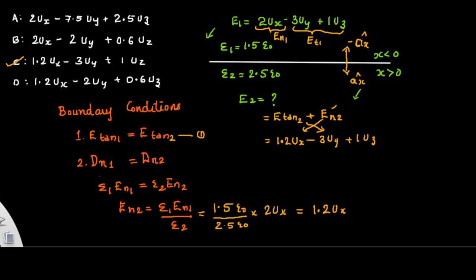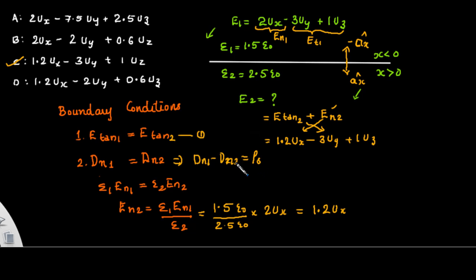One thing to remember is that if there is some surface charge at the interface, then this expression will get modified as D1n minus D2n equals the surface charge. Please make sure that you go through problems which include some surface charge at the interface.